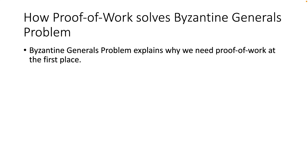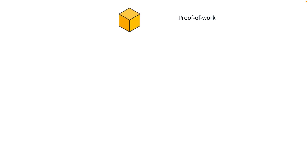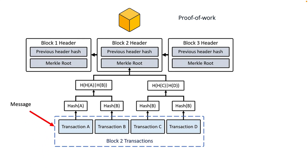All nodes need to agree on a single history of transactions. In the Byzantine Generals Problem, the votes that need to be passed safely correspond to transactions in blockchain. Transactions are secured in blocks, and proof of work builds this consensus.